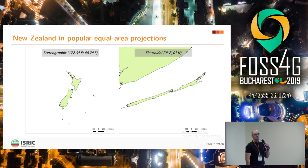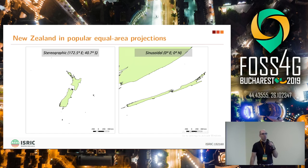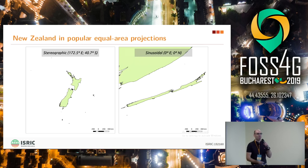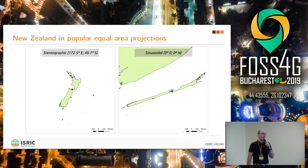And if you go to the Sinusoidal, probably the oldest equal area projection of them all, you start to see things like New Zealand transformed into bananas. The silver lining being that now Australia is much closer, so they don't need to fly six hours to get there anymore.